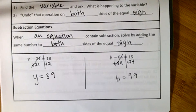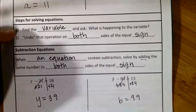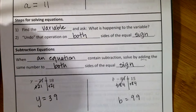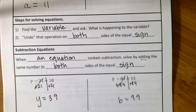That is lesson 11.2 — equations with addition and subtraction. The steps to solving are: find the variable, ask yourself what is happening to the variable — is something being added or subtracted — and then undo that operation on both sides. To undo addition you subtract; to undo subtraction you add. And that is 11.2.